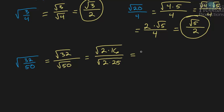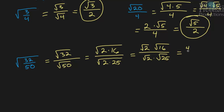So we can rewrite this as the square root of 2 times the square root of 16 over the square root of 2 times the square root of 25, using the product property. Now we can simplify further. The square root of 16 is just 4, so on the top we have 4 times the square root of 2. And in the denominator, the square root of 25 is 5, so we have 5 times the square root of 2.